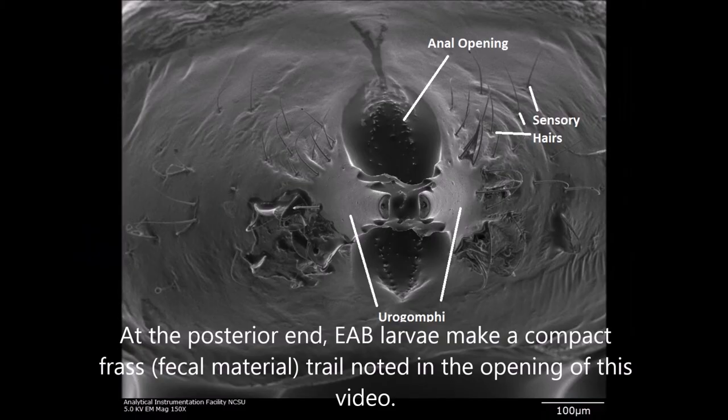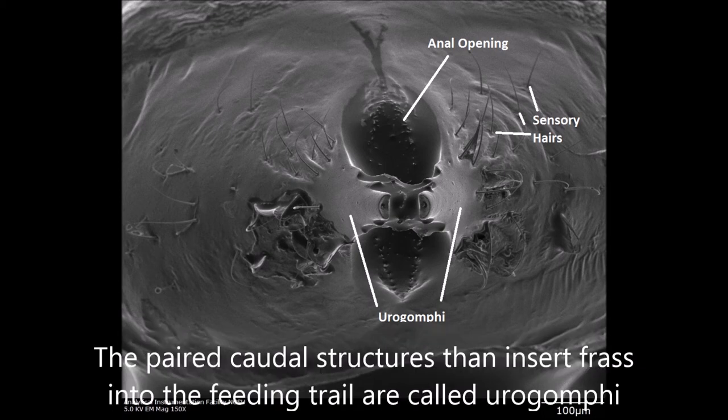At the caudal region at the other end, where frass production takes place, there is a remarkable structure that terminates with the urogomphi — paired caudal structures. The electron microscope shows just how they are structured. You can see the hindgut here, the rectum, and the muscular actions taking place in that hindgut.